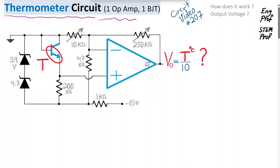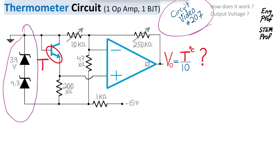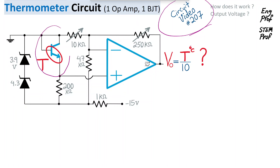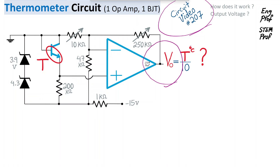A thermometer circuit designed with one operational amplifier and one bipolar junction transistor is explained in this 207th video in the circuit playlist. A series of two Zener diodes, 3.9V and 4.3V, are utilized to provide a reference voltage that is relatively independent of temperature. A BJT is used so that its PN junction serves as a temperature probe, and a combination of two potentiometers — 10kΩ and 250kΩ — in the feedback loop of the op amp are used to provide the proper relationship between measured temperature and the reported output voltage.